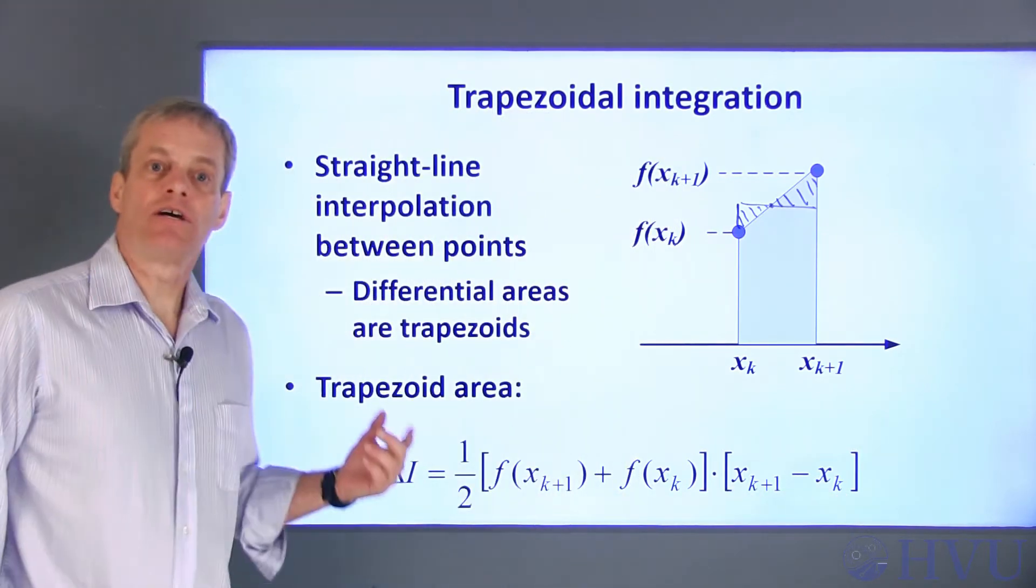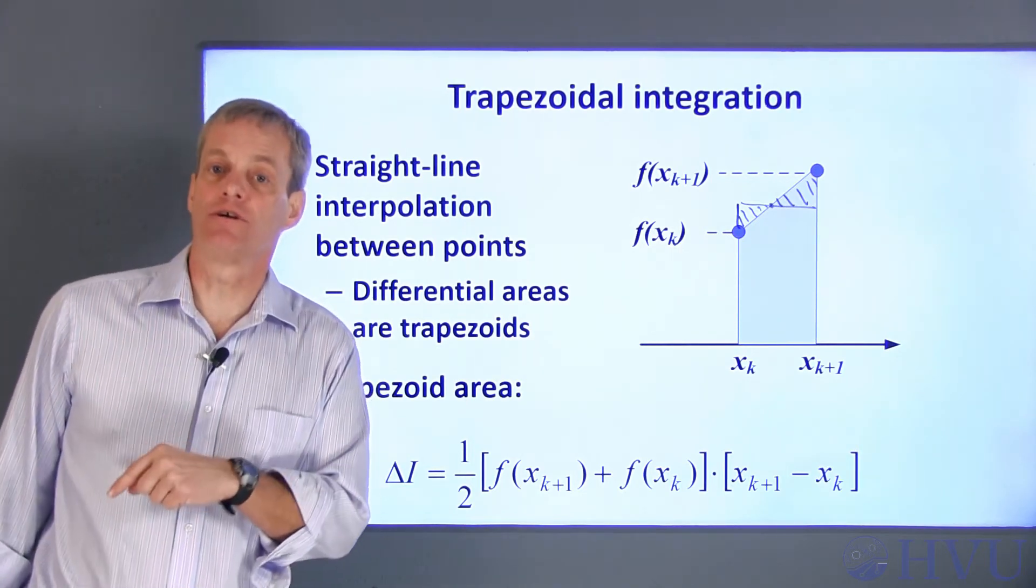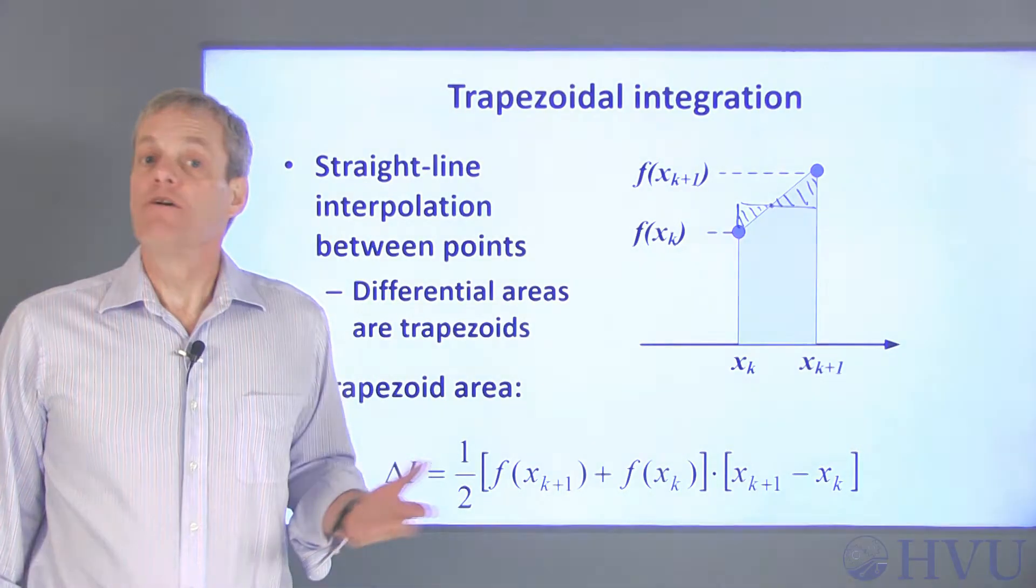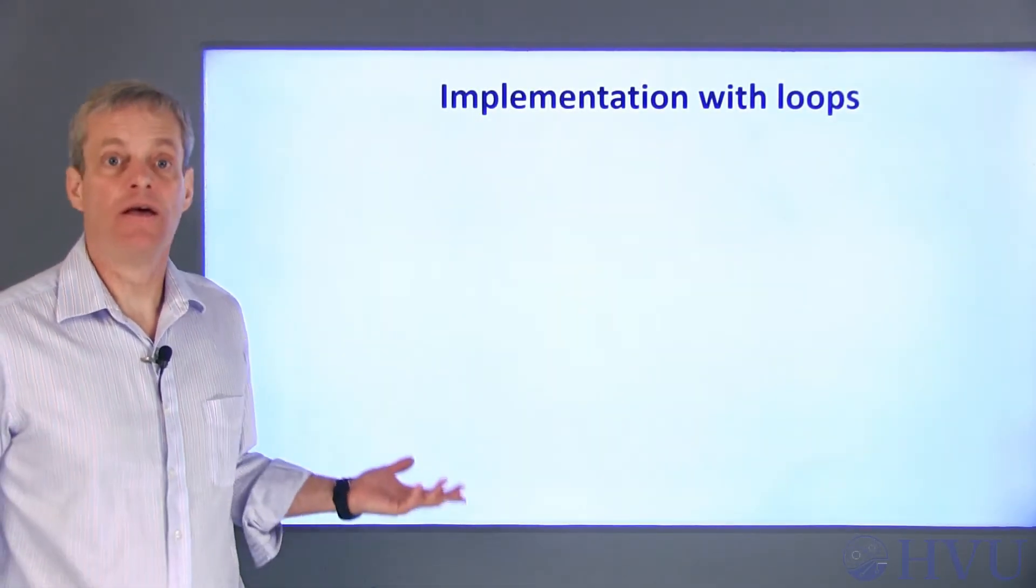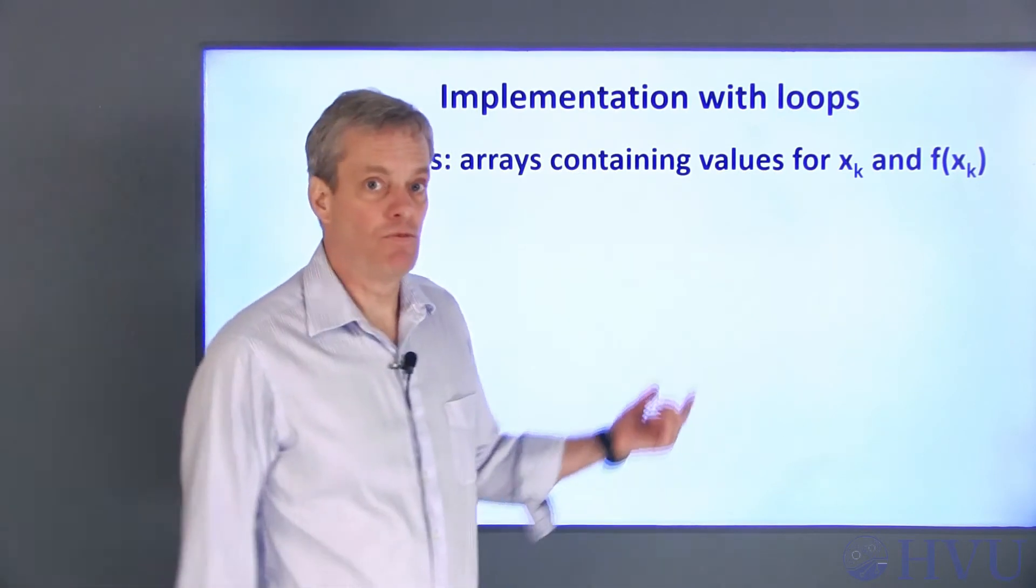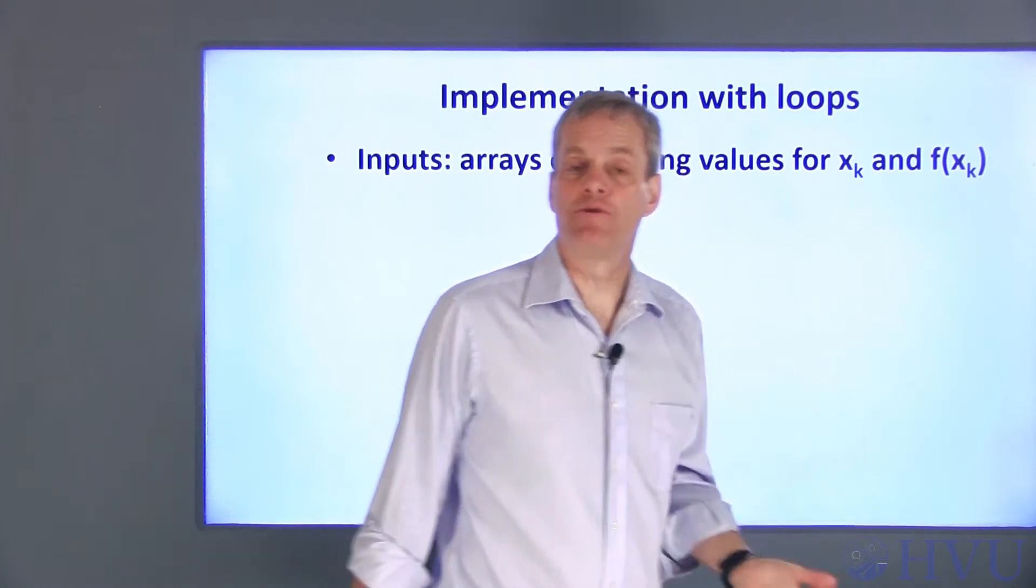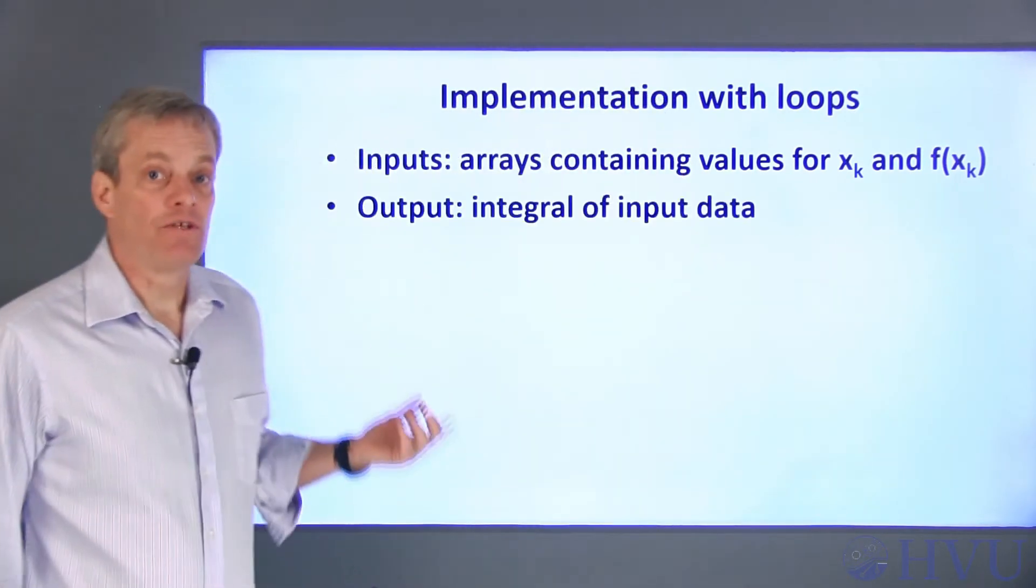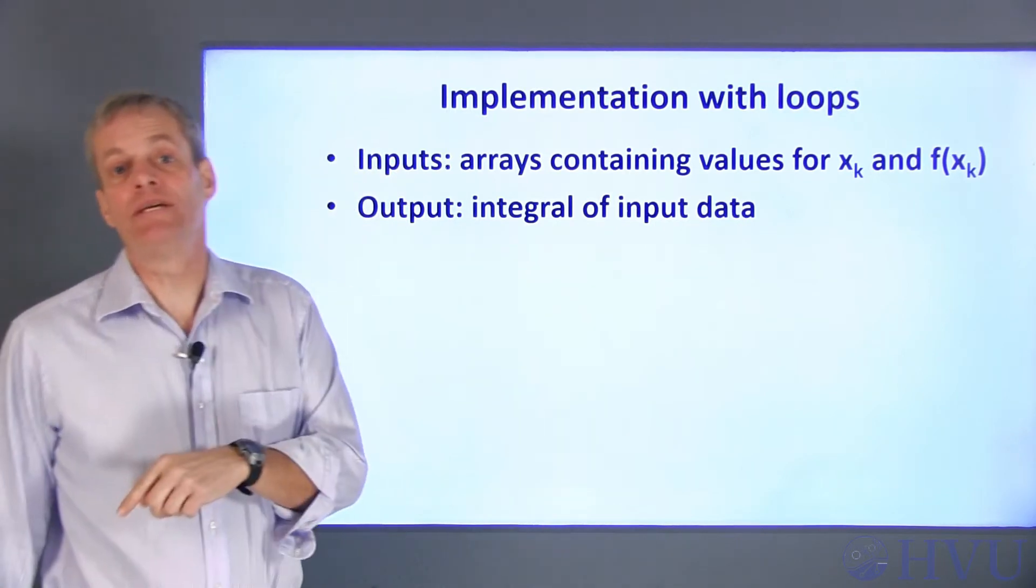Next, I'll talk about using this expression for trapezoidal area to calculate the total area under a curve. I'm going to create a function to implement this process. The inputs to the function will be arrays containing the values of x and f of x at the boundaries of the subintervals. The function will return the total area under the curve, which will be a scalar.